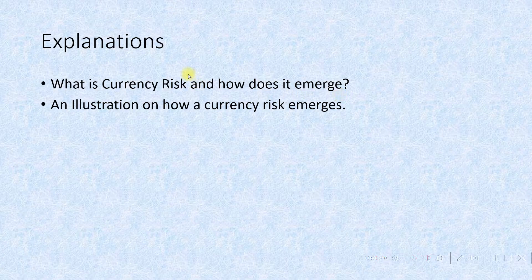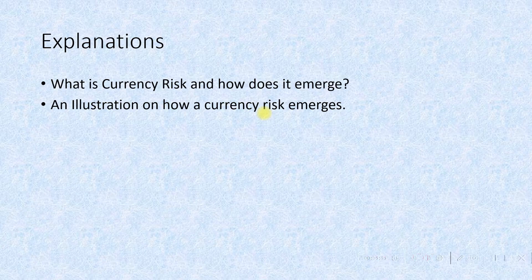Now we'll see an illustration on how currency risk emerges. A typical illustration may be a trader buying German stocks for 10 euros. After this purchase, if the euro depreciates in exchange rate from 1.5 USD to 1.3 USD, the investor when he sells the German stock is believed to realize a 13% loss on the transaction, unless he hedges it using a forward contract or option.